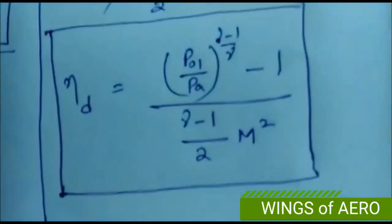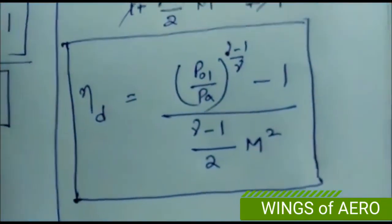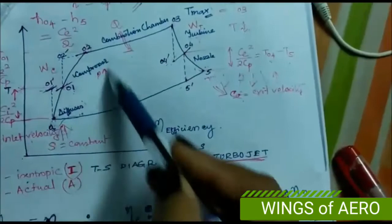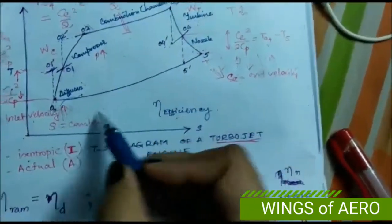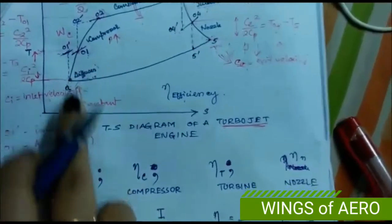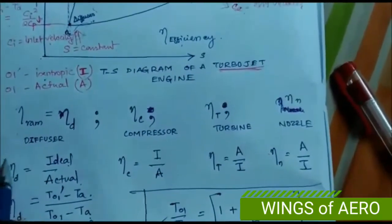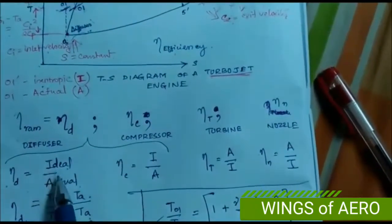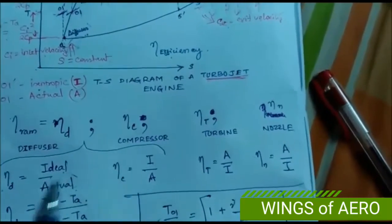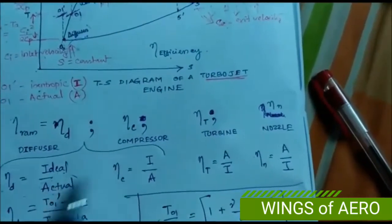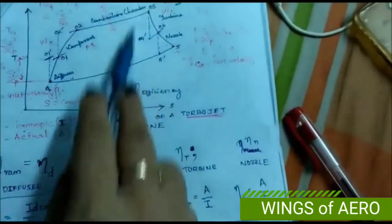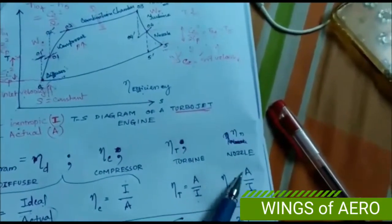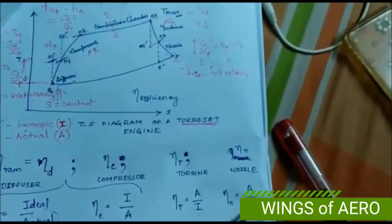The left-hand side components — diffuser and compressor — both use ideal divided by actual (I/A). The right-hand side components — turbine and nozzle — both use actual divided by ideal (A/I). Remember this trick and you can derive any efficiency formula easily, just like the diffuser equation.